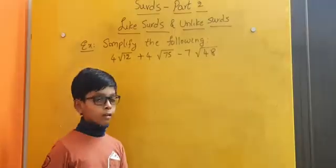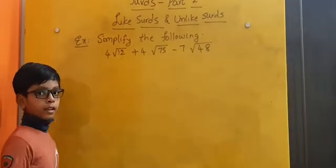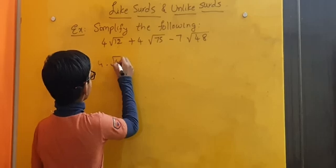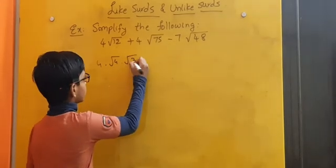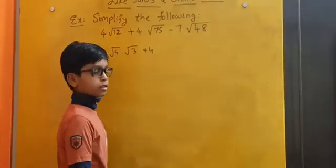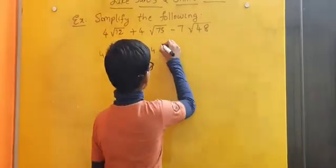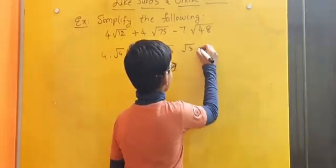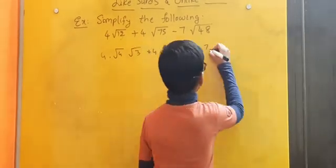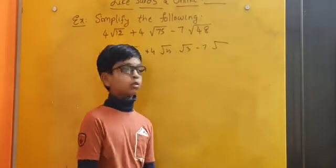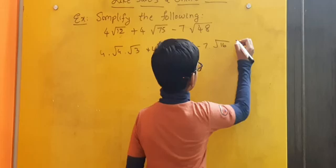Here is another example. Here √12 can be written as √4 × √3 plus 4, here √75 can be written as √25 × √3, minus 7 × √48 can be written as √16 × √3.